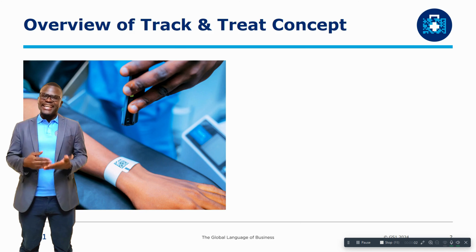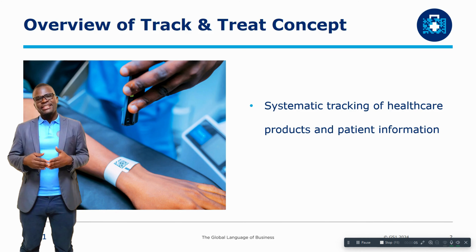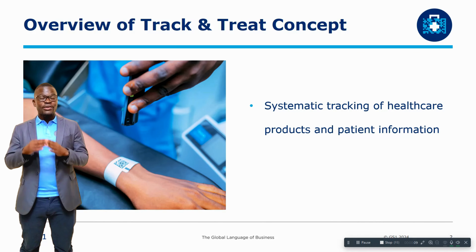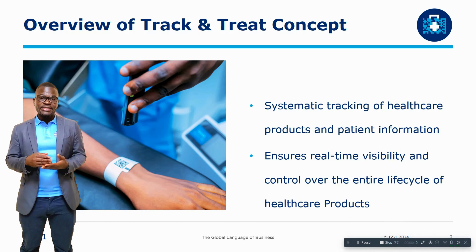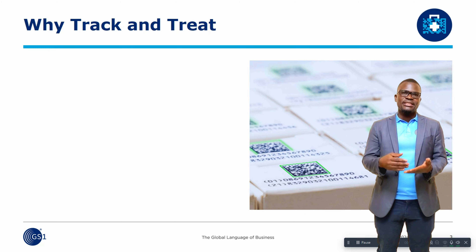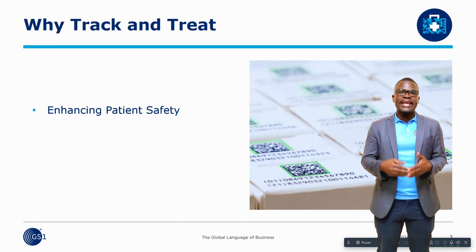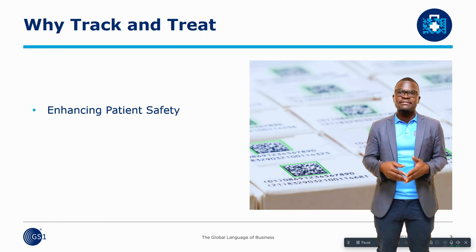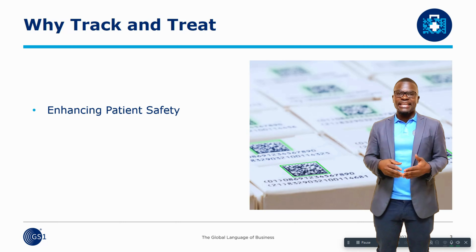What is track and treat? Track and treat is the ability to trace healthcare products and patient information across the healthcare supply chain. By doing this, we are able to ensure that the data about the products and patient is accurate and precise. Why track and treat? By being able to track healthcare products and patient information, number one, we can enhance patient safety by ensuring that the right patients receive the correct treatment at the right time.